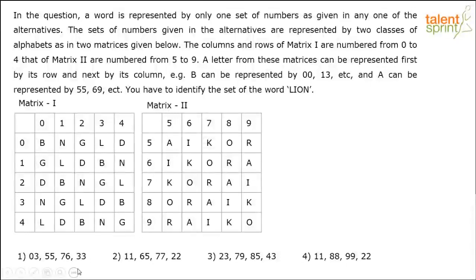In this question, a word is represented by only one set of numbers as given in any one of the alternatives. The sets of numbers given in the alternatives are represented by two classes of alphabets as in two matrices given below. The columns and rows of matrix 1 are numbered from 0 to 4 and that of matrix 2 are numbered from 5 to 9.